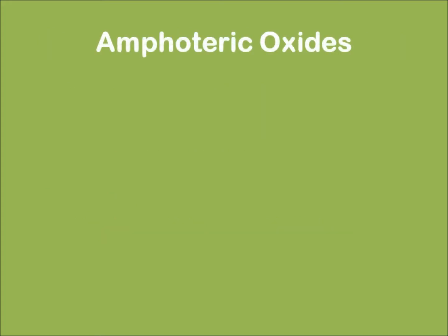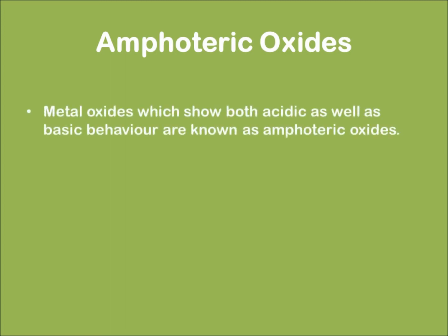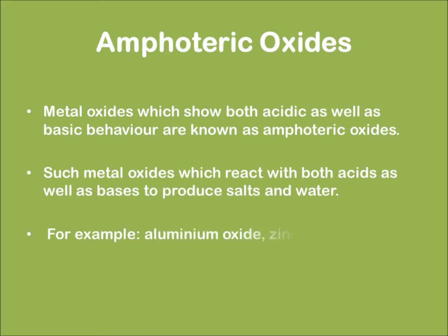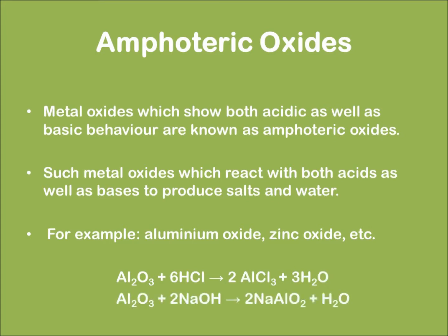Amphoteric oxides are metal oxides which show both acidic and basic behaviour. Such metal oxides react with both acids and bases to produce salt and water. Examples of amphoteric oxides are given, showing two reactions where salt and water are produced.